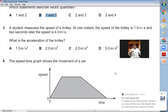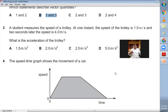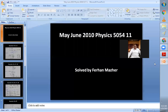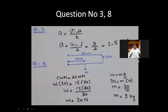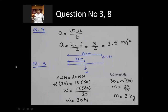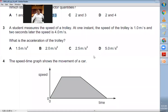Question number three: a trolley has initial velocity u = 1 m/s, final velocity v = 4 m/s, and time t = 2 seconds. Using acceleration = (v − u) / t, we get a = (4 − 1) / 2 = 3/2 = 1.5 m/s². So A is the right choice for question number three.